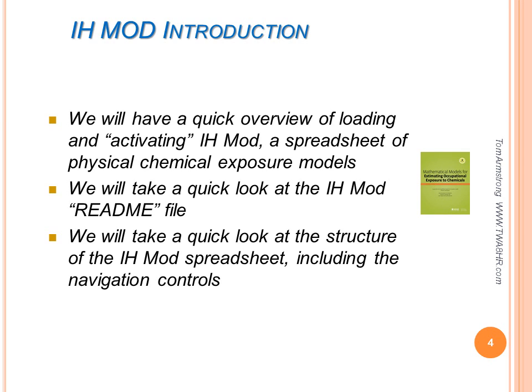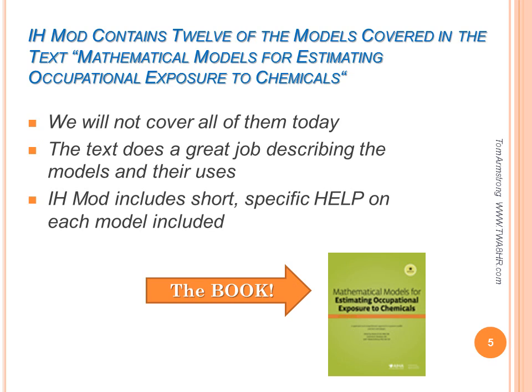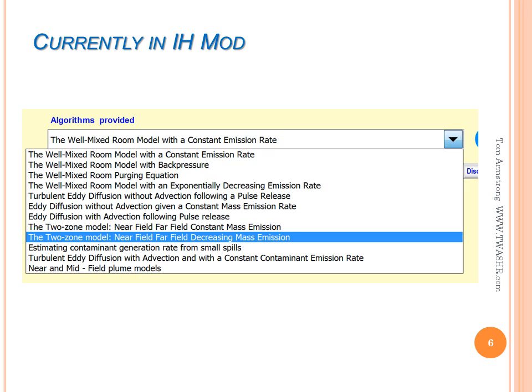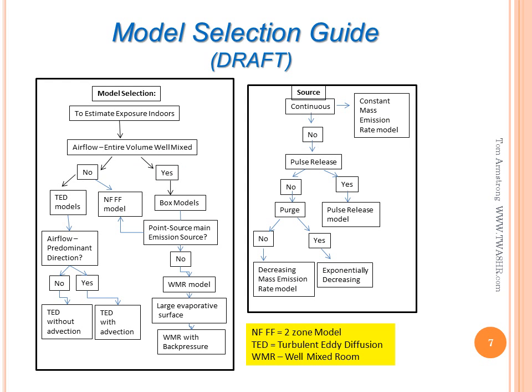Let's start with the IHMOD review. If you choose to use IHMOD you should review the readme file associated with it on the Exposure Assessment Strategies webpage — link to that shown later. Now let's take a quick look at what is in IHMOD. The model contains 12 of the models covered in the text 'Mathematical Models for Estimating Exposure.' IHMOD has brief help built into each of the models but the book shown here is the key resource. These are the models currently in IHMOD — you can pause and take a closer look if you wish. More may be added at a later date. The model draft selection guide is in development, and thanks to Susan Arnold and Gurmarthi Ramachandran of the University of Minnesota for this great approach.